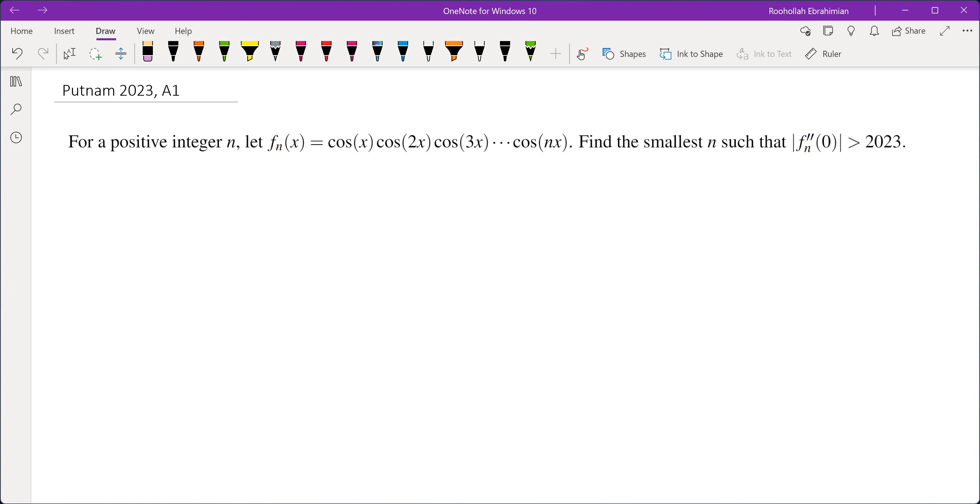We're going to start plugging different values of n and see if we can find a pattern. f_1(x) is cos(x), f_1'(x) is negative sin(x), and f_1''(x) is negative cos(x). So we can easily evaluate f_1''(0) to be negative 1, so its absolute value is 1.